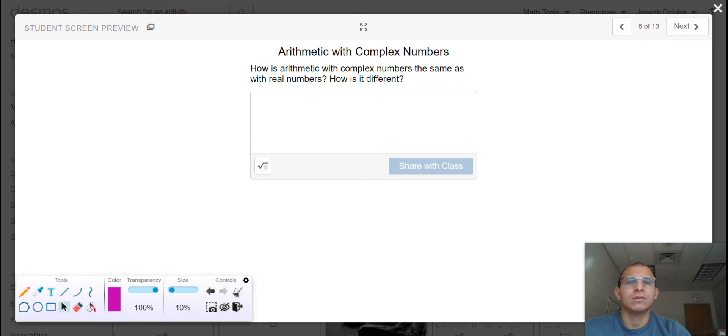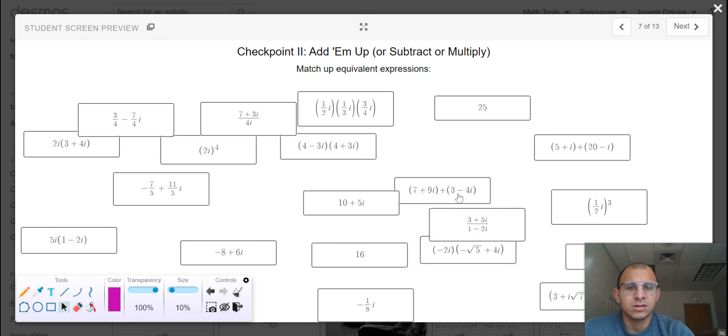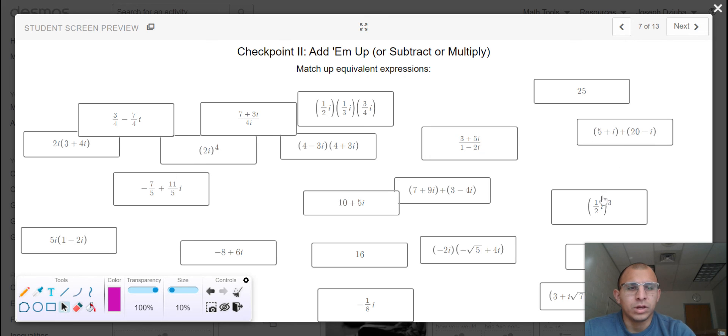So briefly share with your peers how is arithmetic with complex numbers the same as real numbers and how is it different. There are no right or wrong answers here so long as you are speaking to some degree about arithmetic and our operations with numbers and imaginary numbers. All right that brings us here. So I'm going to actually build in a checker so you can see how many you've gotten correct or if you're on the right path, but we are looking to match up our expressions with one another.